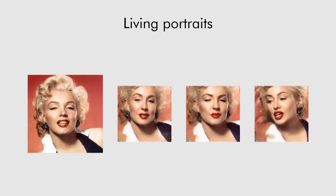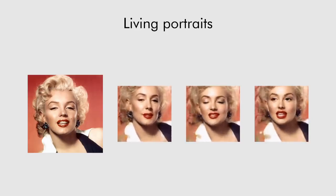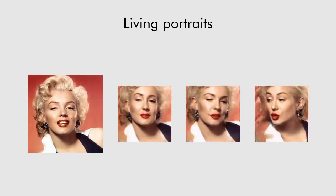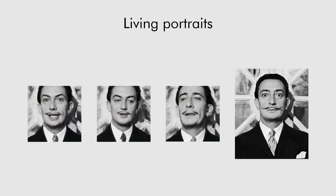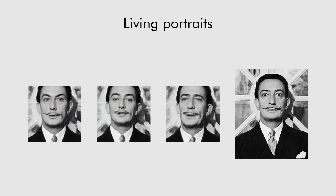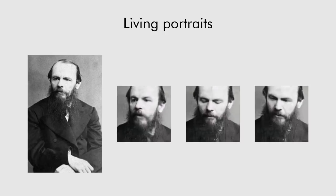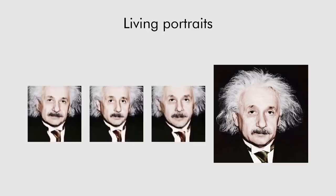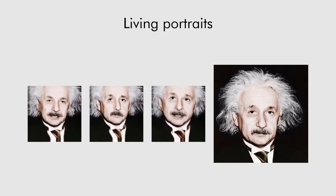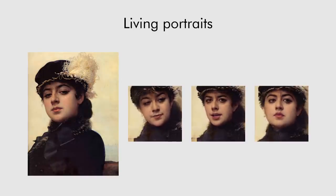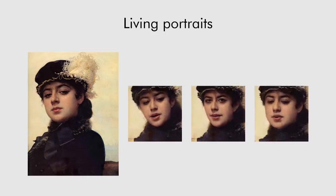We can push the generalization even further, applying the system to famous photographs. In each case, we automatically find people in the VoxCeleb2 dataset with landmarks suitable for the animation of a particular portrait. With a certain degree of success, we can even apply the model to paintings, despite the large domain gap between paintings and YouTube videos.